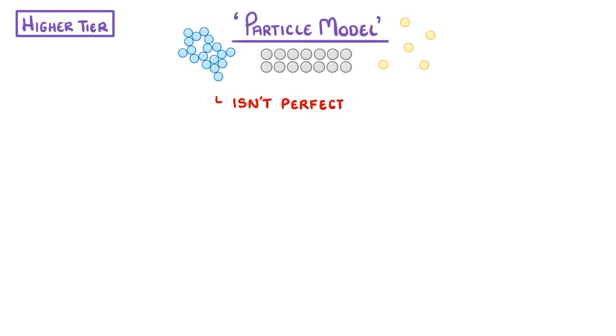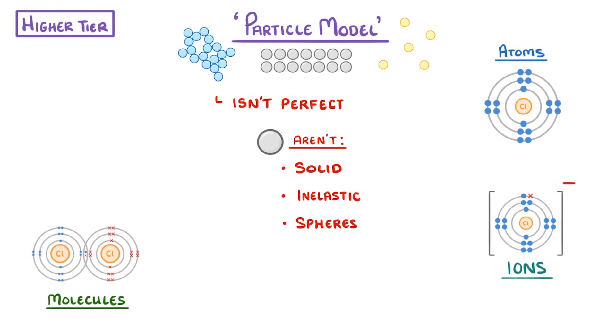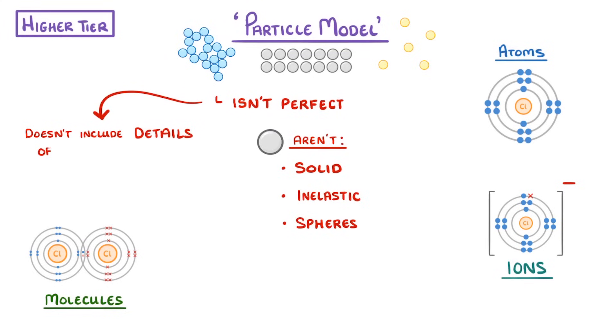Now the last thing we need to mention is that the particle model we used for explaining the states of matter isn't perfect. In reality, particles aren't actually solid, inelastic, or spheres—instead they're atoms, ions, or molecules. Another issue is that the model doesn't include any details of the forces between the particles, for example, it doesn't consider how strong they are or how many of them there are.